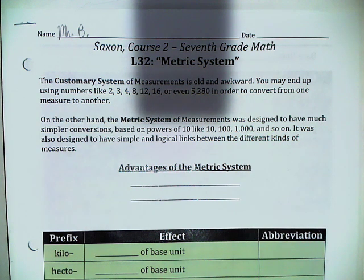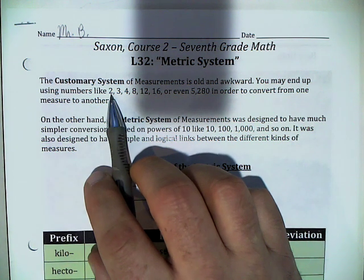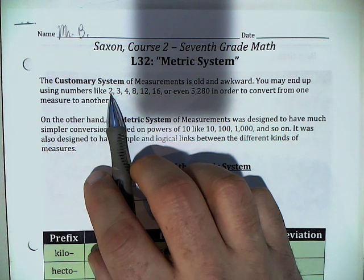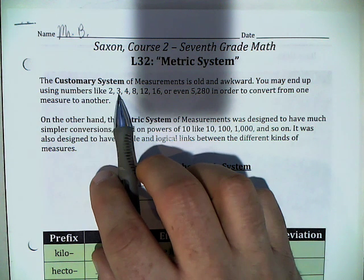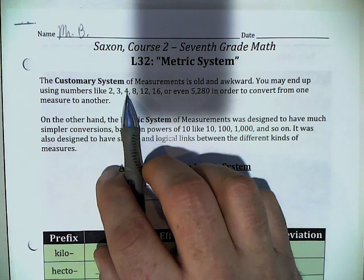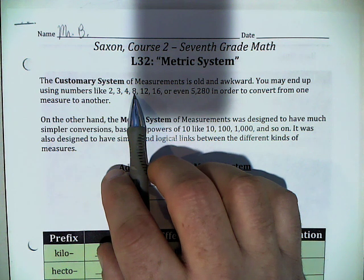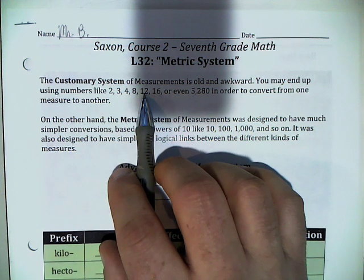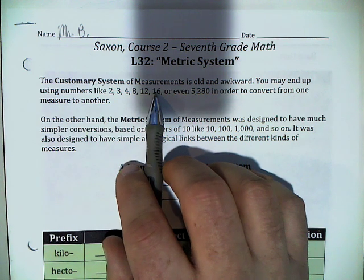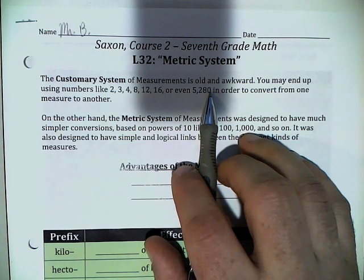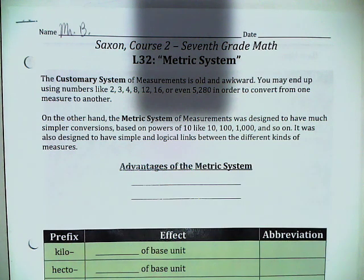It's awkward because you can end up using all kinds of different numbers in your conversions. Like two tablespoons is an ounce, three teaspoons is a tablespoon, four quarts is one gallon, eight ounces is one cup, twelve inches is one foot, twelve ounces is one pound, and 5,280 feet is one mile. We have all these changing numbers when it comes to our conversions. On the other hand, the metric system was developed to make our conversions much simpler.